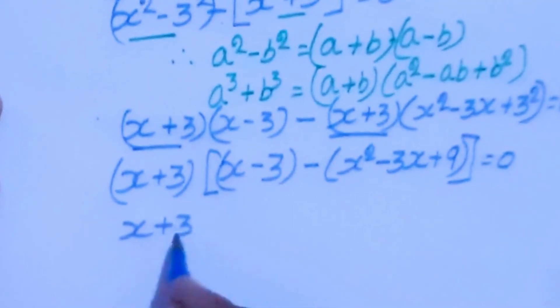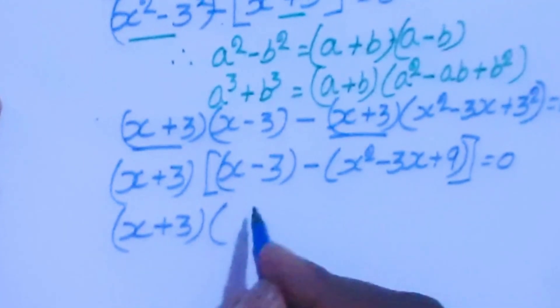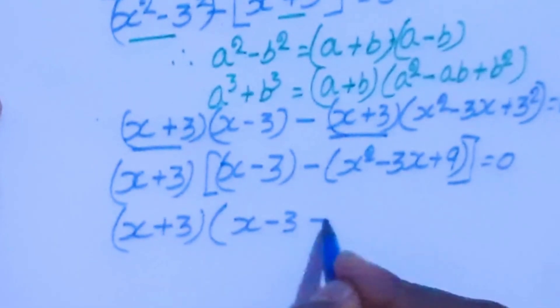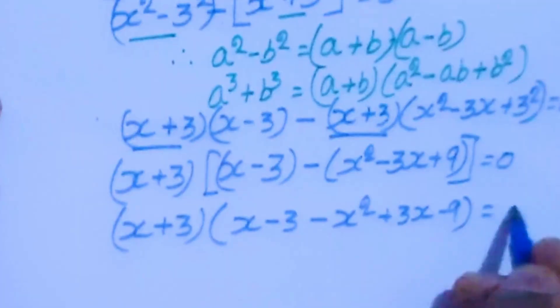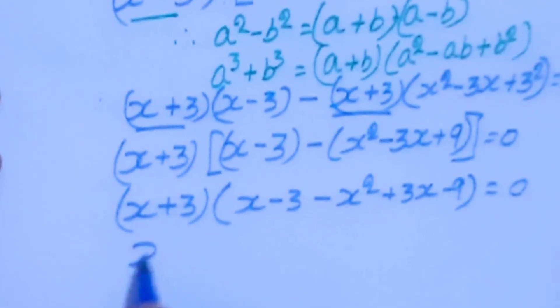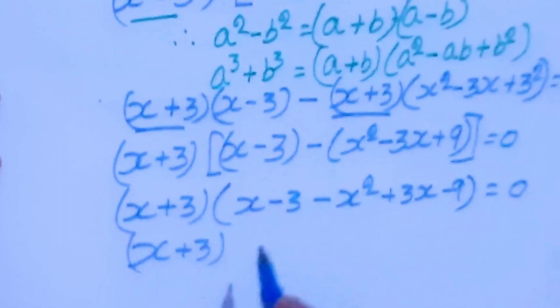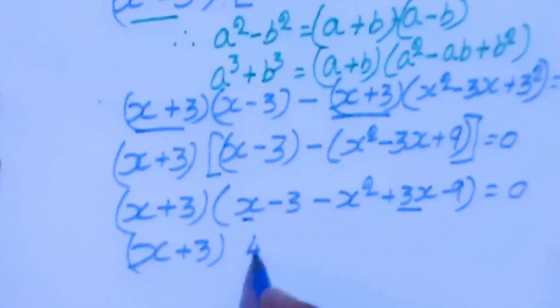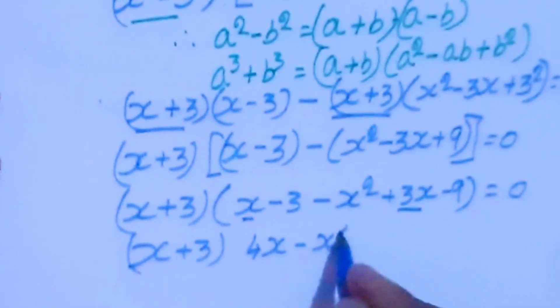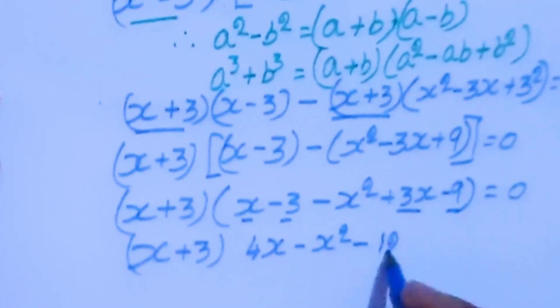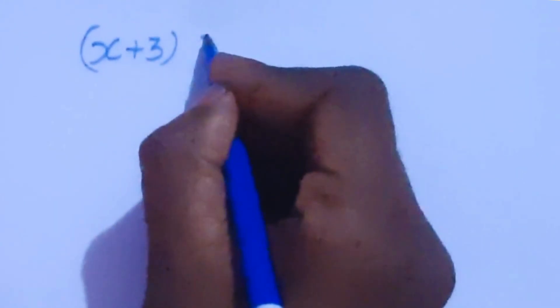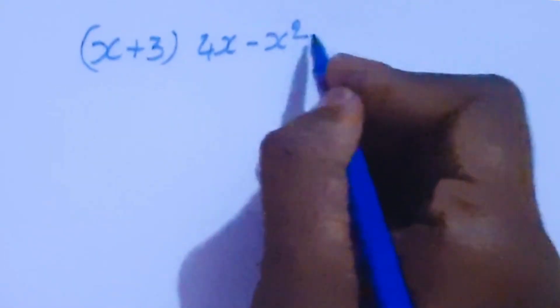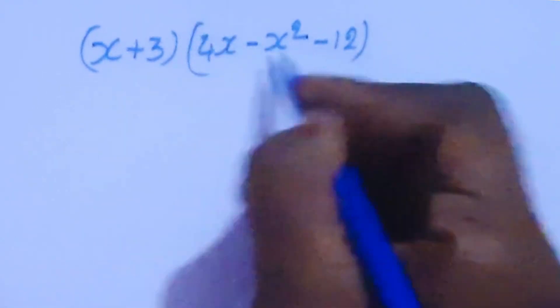Now we are going to take (x plus 3) common. So x plus 3 times open bracket (x minus 3) minus (x squared minus 3x plus 9) equal to 0. Expanding inside: 4x minus x squared minus 12 equal to 0.